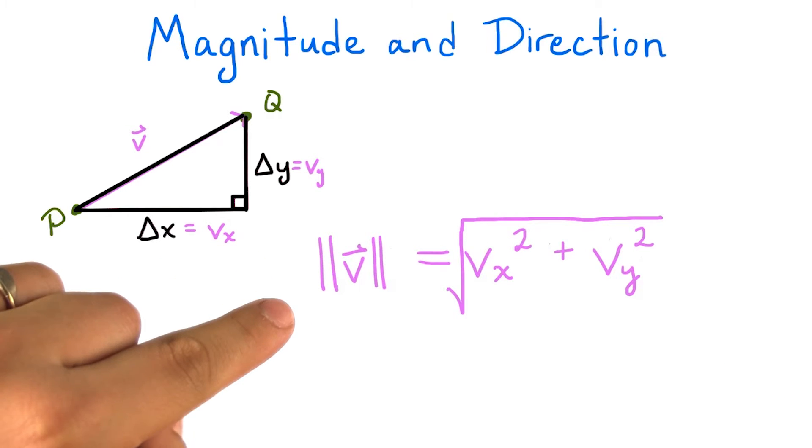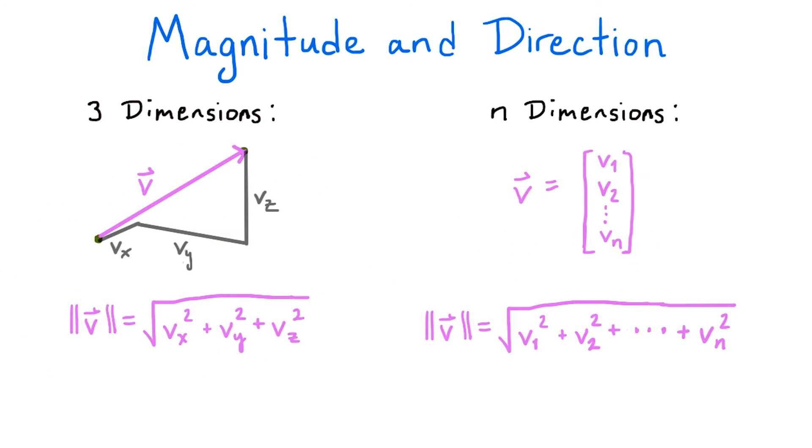Note that we use the double bars around a vector as notation for its magnitude. A generalization of this formula holds true in higher dimensions, too. If v is a vector in n-dimensional space, and we call its coordinates v1, v2, up through vn, then the magnitude of v is the square root of the sum of the squares of its coordinates.